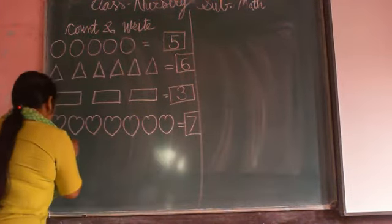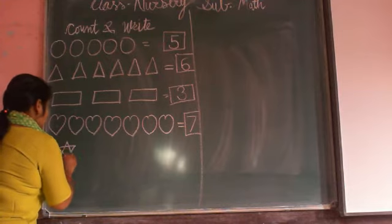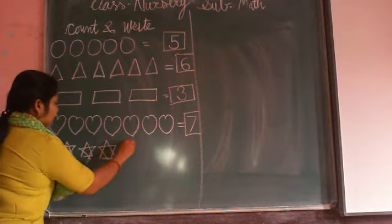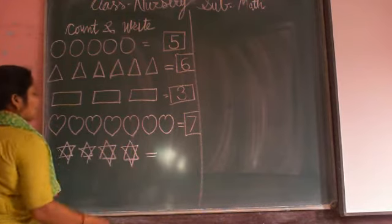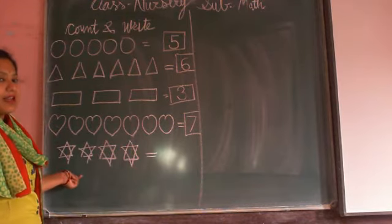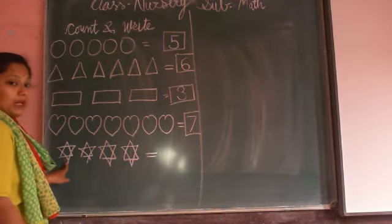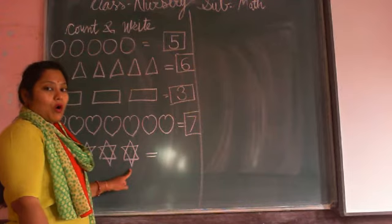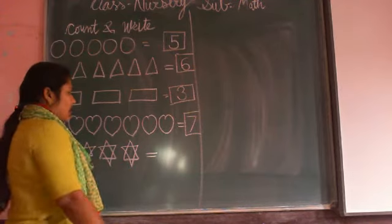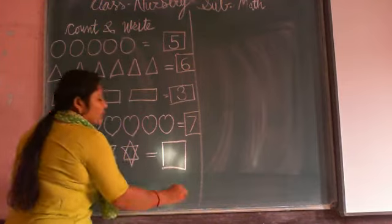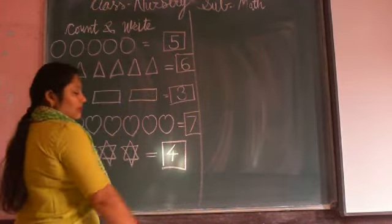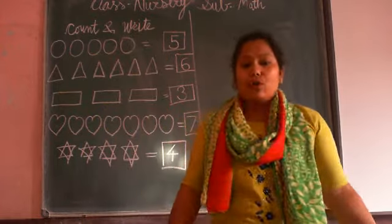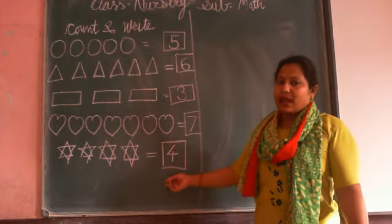Now see here. Which shape is this? Stars. Very good. How many stars are here? One, two, three, four. Four stars. So here we write number four. One slanting line, one sleeping line and one standing line make number four. Here four stars, so here we write number four.